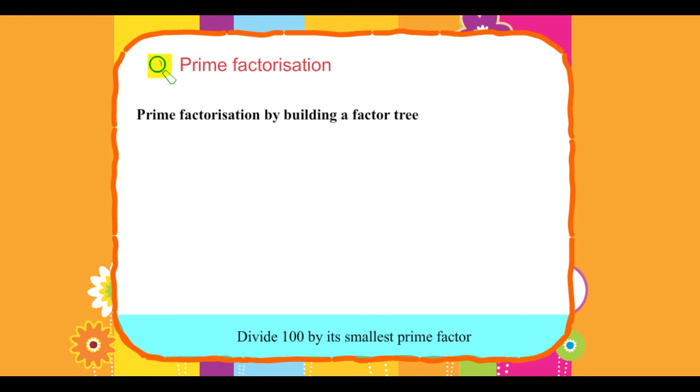Steps: Divide 100 by its smallest prime factor. 100 divided by 2 equals 50.